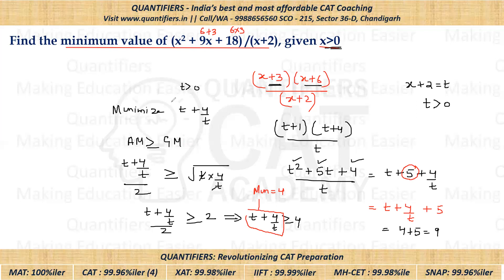See, we had to minimize T + 4/T. If we notice in T + 4/T, their product is a constant value. So I can say that there are two terms, let's say this is a and let's say this is b. I know that product of a and b is equal to 4.